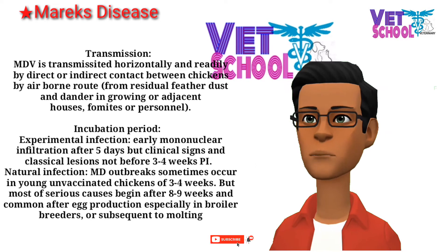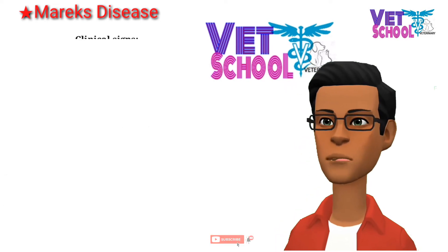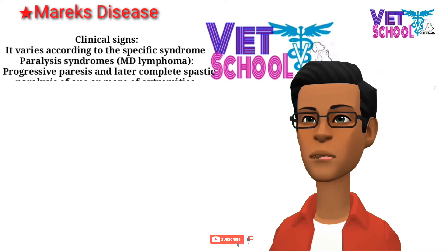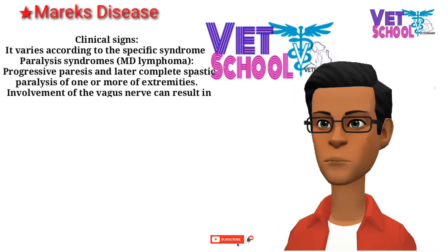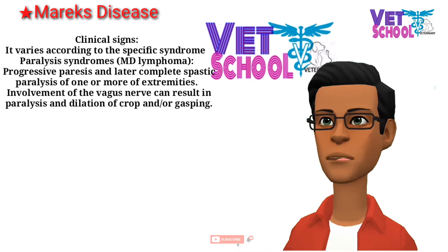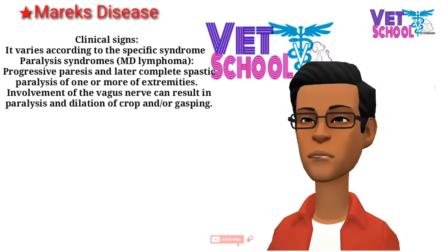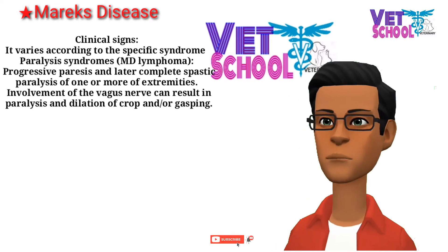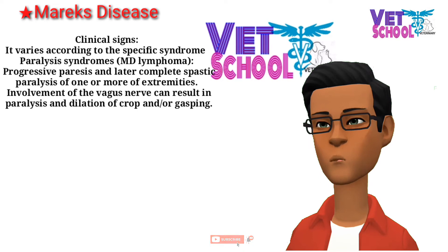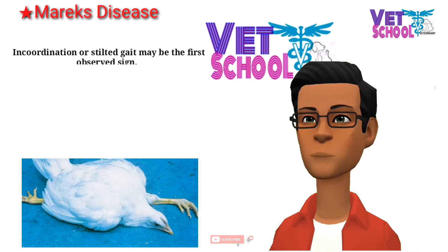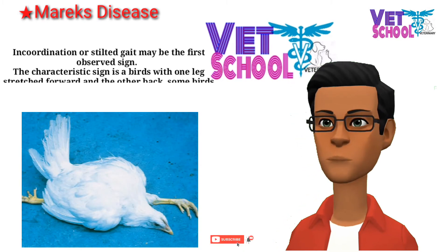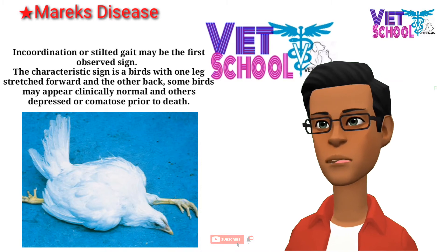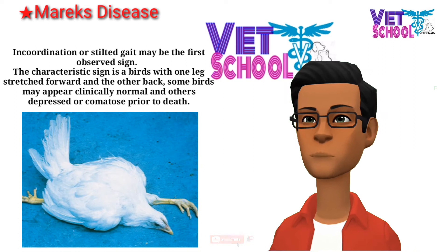Cases are common after production, especially in broiler breeders or subsequent to molting. Clinical signs vary according to the specific syndrome. In the paralysis syndrome, Marek's disease lymphoma causes progressive paresis and later complete spastic paralysis of one or more extremities. Involvement of the vagus nerve can result in paralysis and dilation of the crop and/or gasping. Incoordination or stilted gait may be the first observed sign.